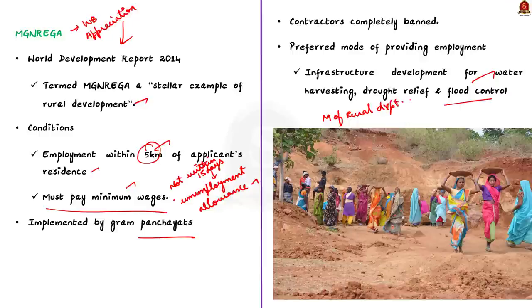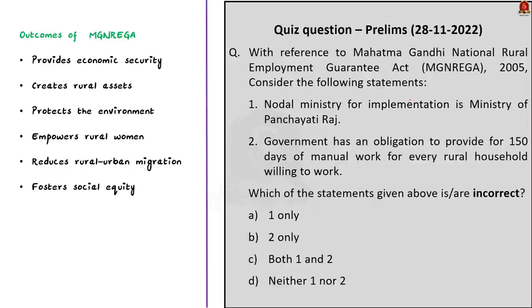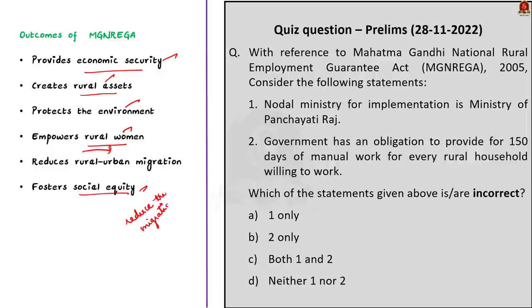The outcomes of MG NREGA implementation include providing economic security and creating rural assets. NREGA also helps in protecting the environment, empowering rural women, reducing rural-urban migration, and fostering social equity. NREGA also has the potential to reduce migration of labour from rural to urban areas, thereby helping avoid urban crowding. You can quote MG NREGA as an example of a social security scheme provided by the government in your mains answers.